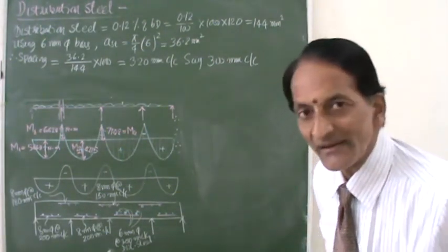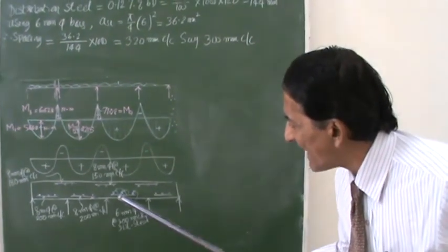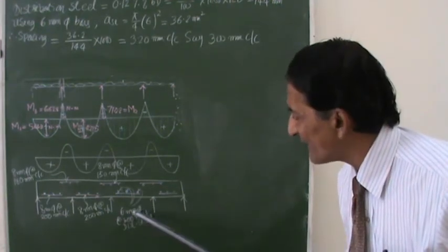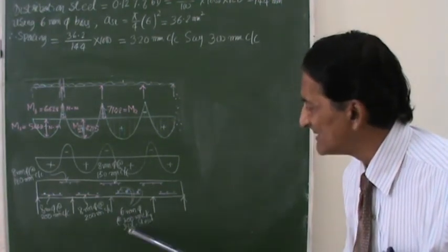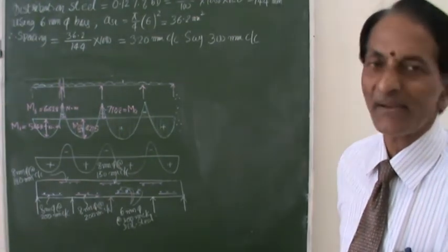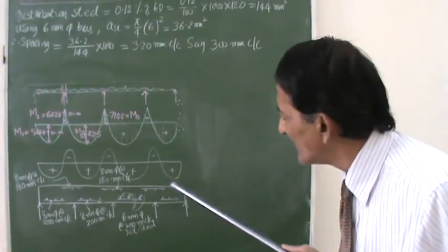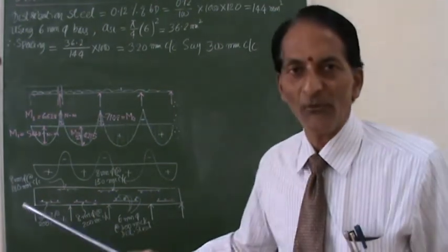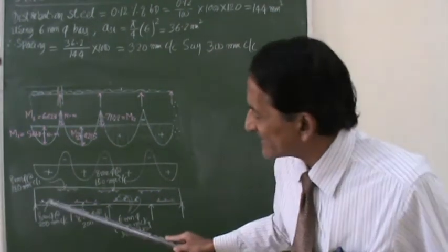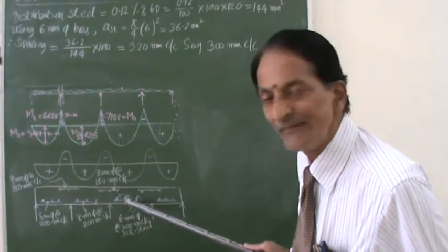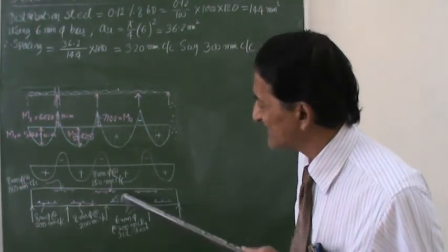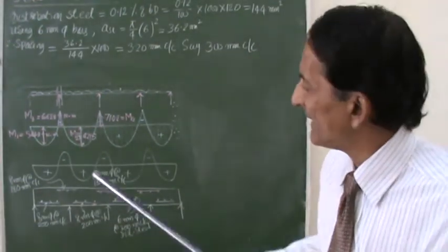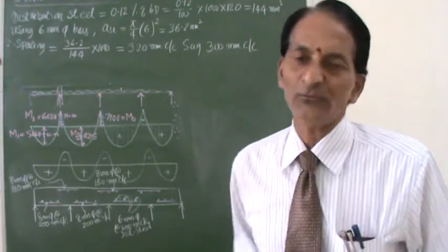So now here, you can see that these distribution bars, whatever I have shown here as blue dots, it is 6mm at 300 mm center to center. That is your distribution bars. This is overall drawing of your continuous slab. We have fixed up the main reinforcement at different places and we are fixing up the distribution steel required in the entire slab.